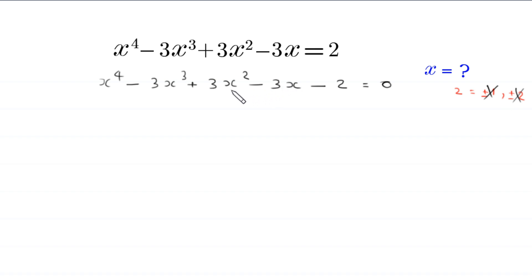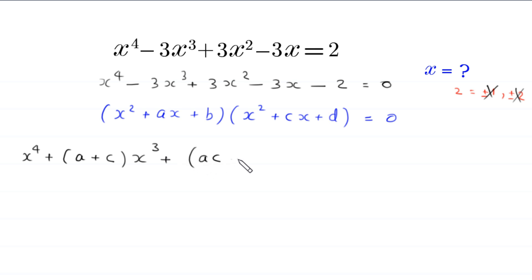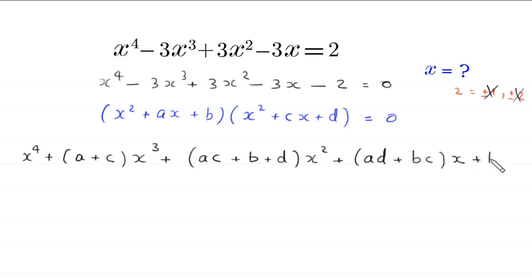We suppose that this quartic expression is a product of two quadratic factors: (x² + ax + b)(x² + cx + d) = 0. Expanding this product gives x⁴ + (a+c)x³ + (ac + b + d)x² + (ad + bc)x + bd = 0.